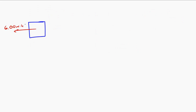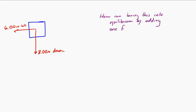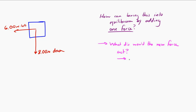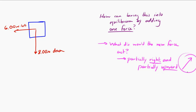Let's look at the next example. Let's say that I have six Newtons to the left and eight Newtons downward, and I'm going to ask a different question: how could we bring this into equilibrium by adding only one force? Before we think about it in terms of numbers, let's think about the general direction. I have a force to the left and a force downward, so to bring this into balance, I need one force that partially points to the right and partially points upward — somewhere up and to the right. Whatever force I add, it has to supply six Newtons to the right and eight Newtons upward in order for there to be balance.